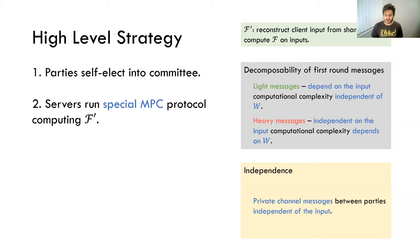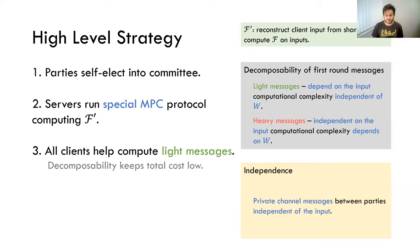Now the servers want to run the special MPC protocol computing F prime — which reconstructs all client inputs from the shares and computes F on the reconstructed inputs. One of the challenges is that the servers need to commit to their input in the first round but they don't yet have it. To deal with this, we're going to help the servers compute the first round messages. Decomposability splits the messages into heavy messages independent of input, and light messages that actually depend on the input. All the clients come together and help compute these light messages because they hold parts of the input. Because the computational complexity of light messages is low, the overhead from this additional helping is also low overall.